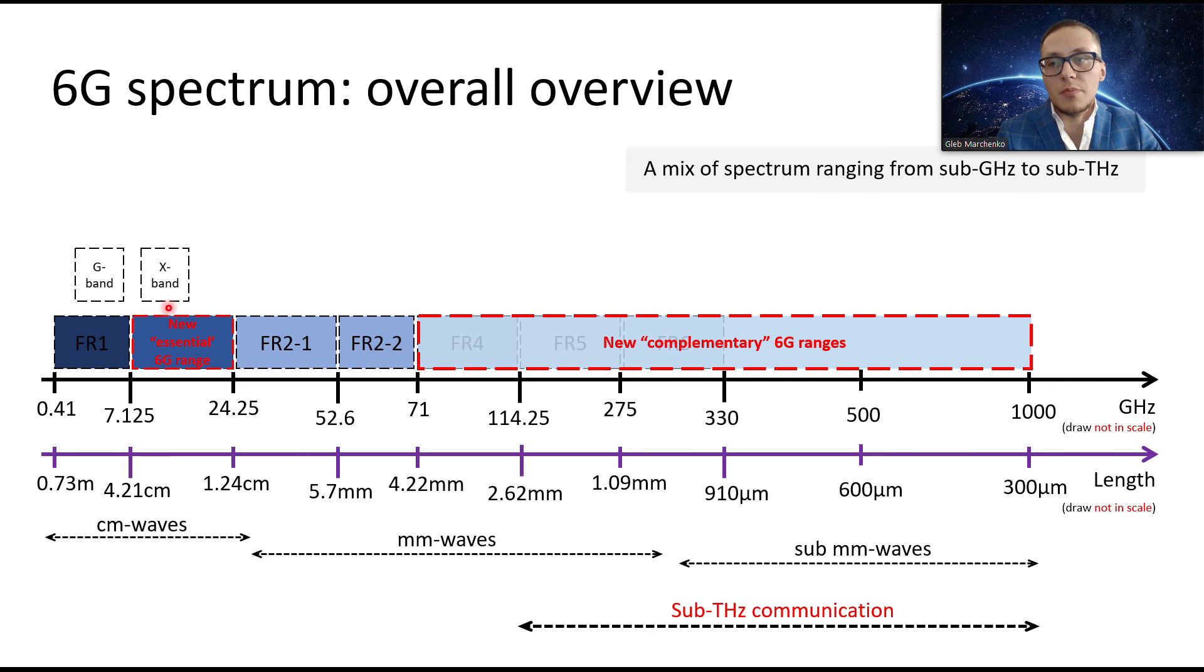This is G band for example, this part is X band, K, KU, KA band which is used for radars, for drones, for space communication, basically satellite communication works in these bands usually.